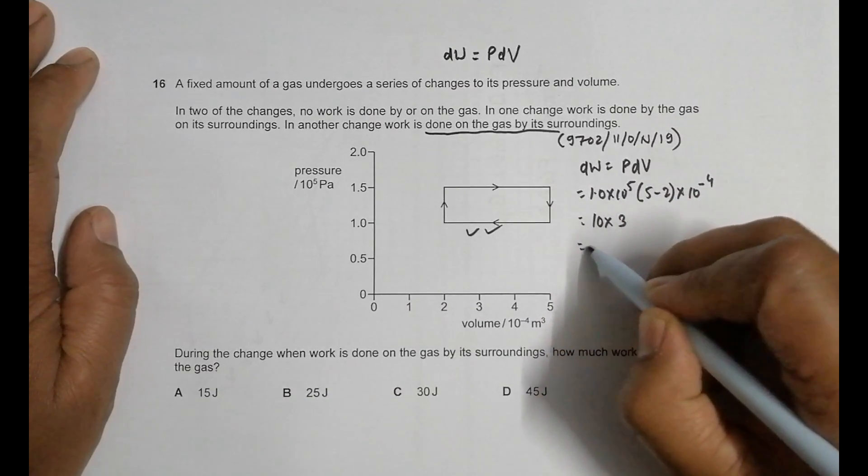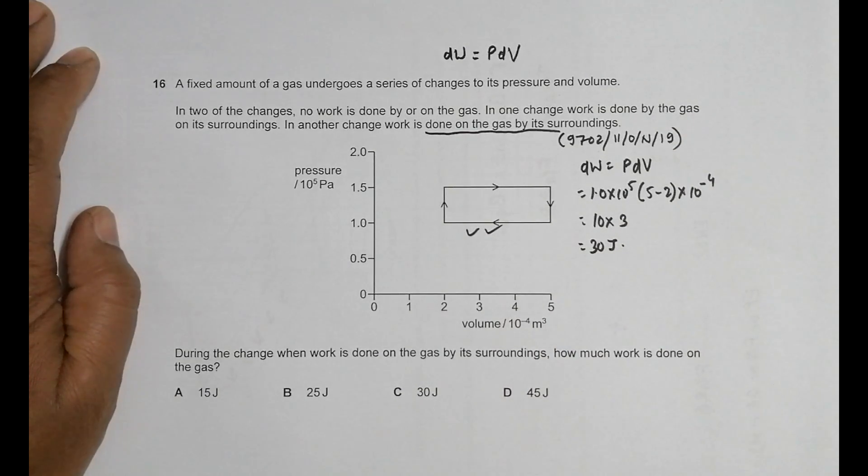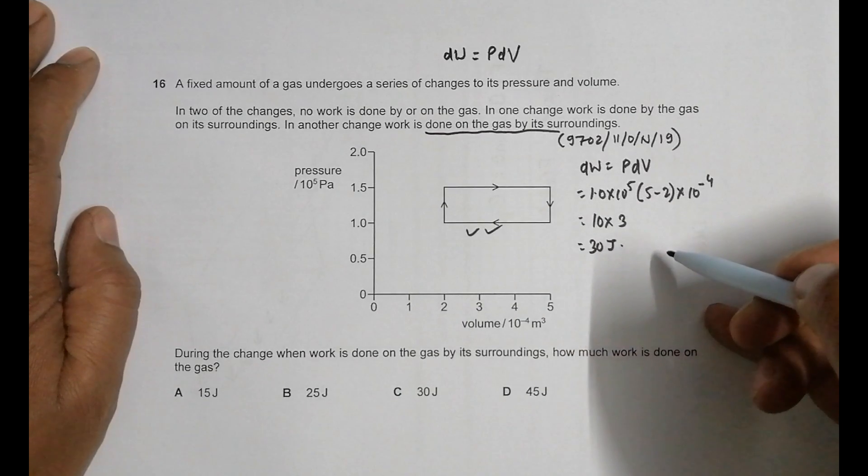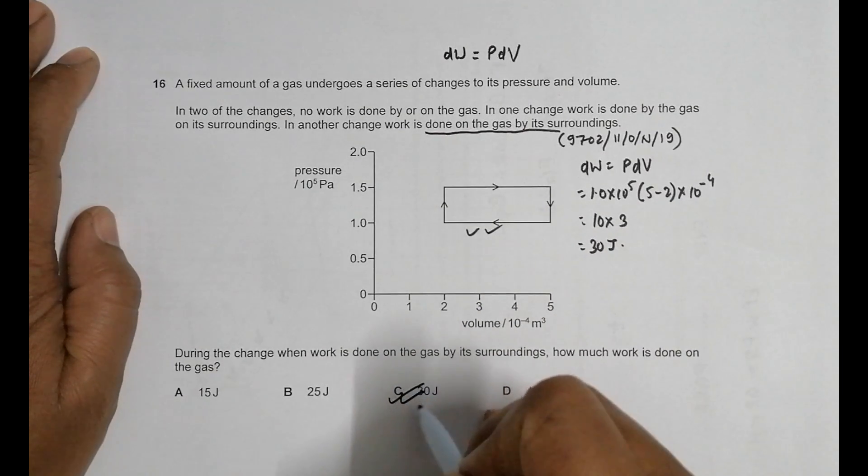So this times this is 10^1, then 10 into 5 minus 2 is 3, equals 30 Joules. So the work done on the gas by the surroundings is 30 Joules, and our correct choice becomes choice number C.